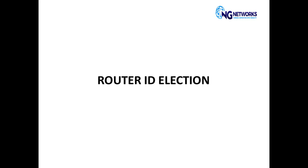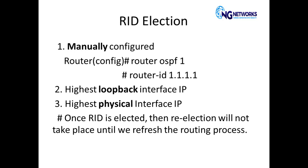In this video I'm going to tell you about the router ID election — basically what are the criteria through which a router ID is elected on a router. The criterias are mentioned on the screen. There are three criterias. The first criteria is that the highest preference is given to the manually configured router ID.